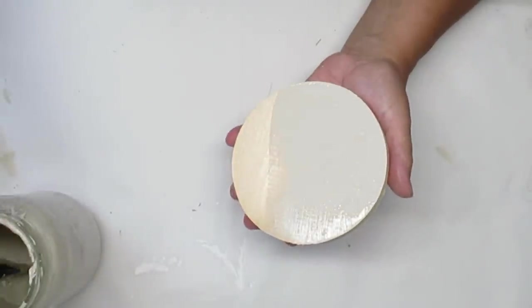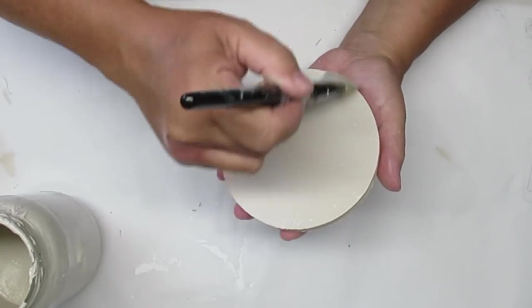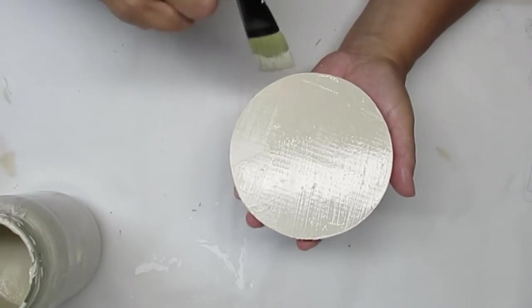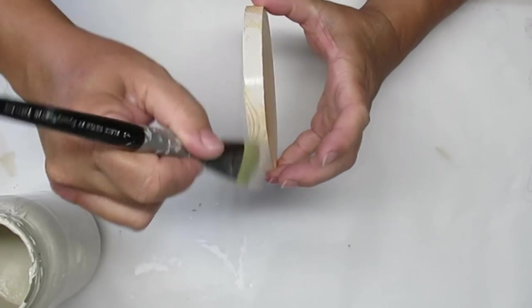I'm just going to give it one light coat and make sure I get the sides. This is something that you can find at the Dollar Tree however this one is from Michael's because I could not find any at my local Dollar Tree.